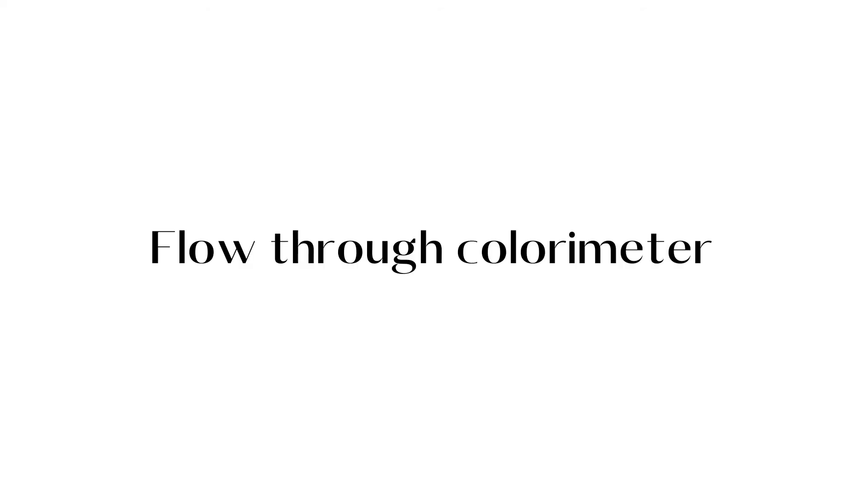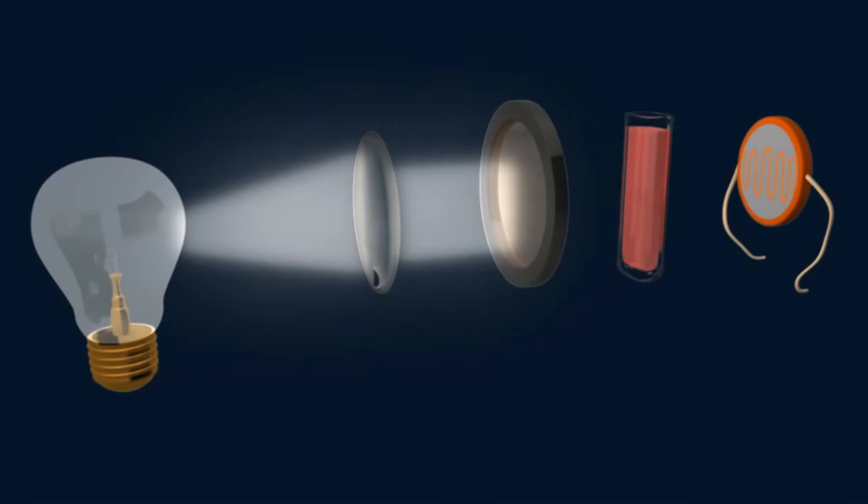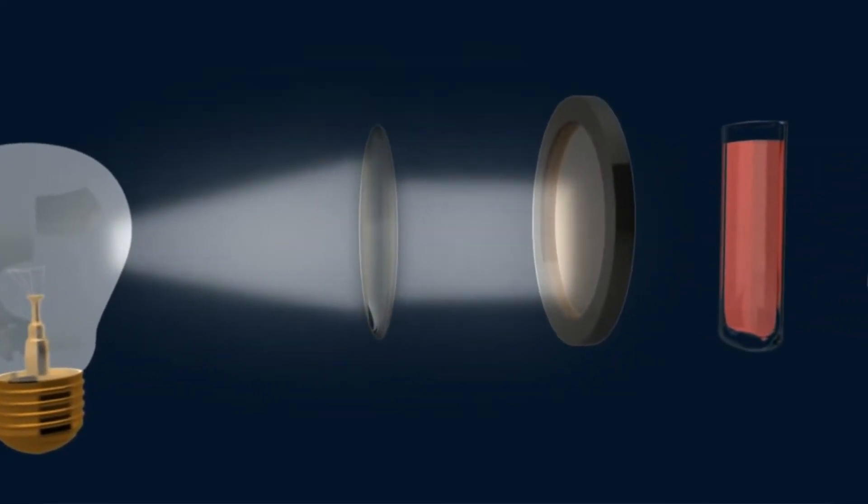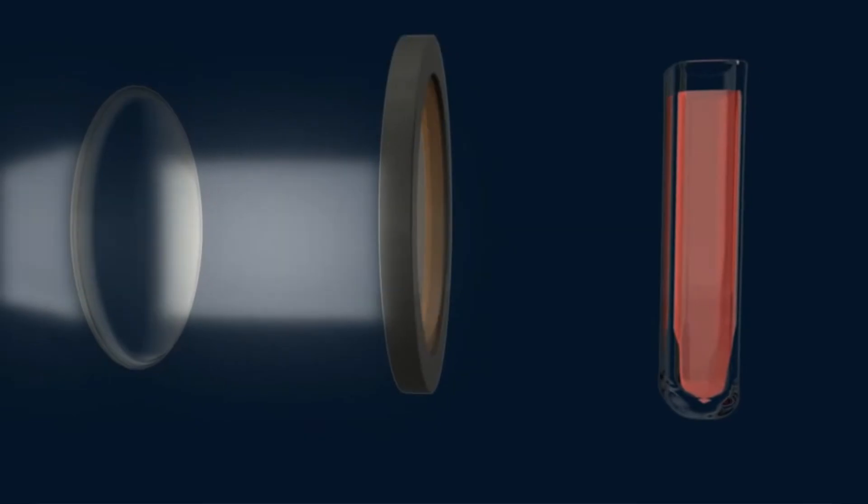The next component is flow-through colorimeter. The colorimeter is to measure the intensity of color produced in the reaction and to provide a graphical display of change in color with time.